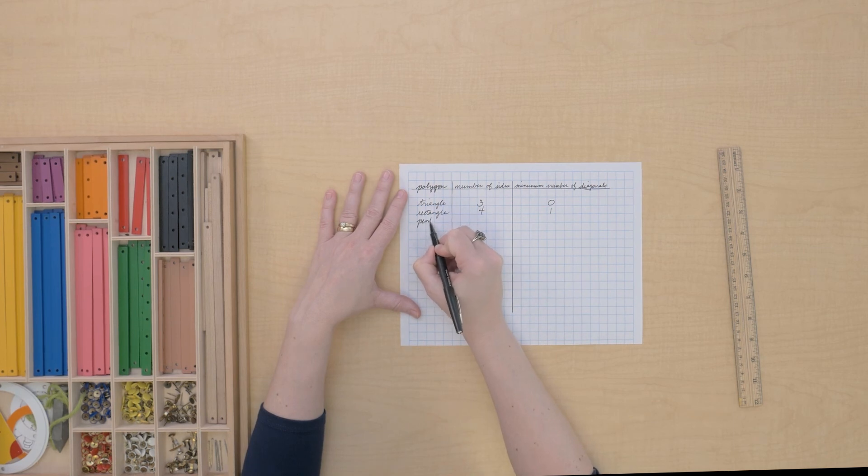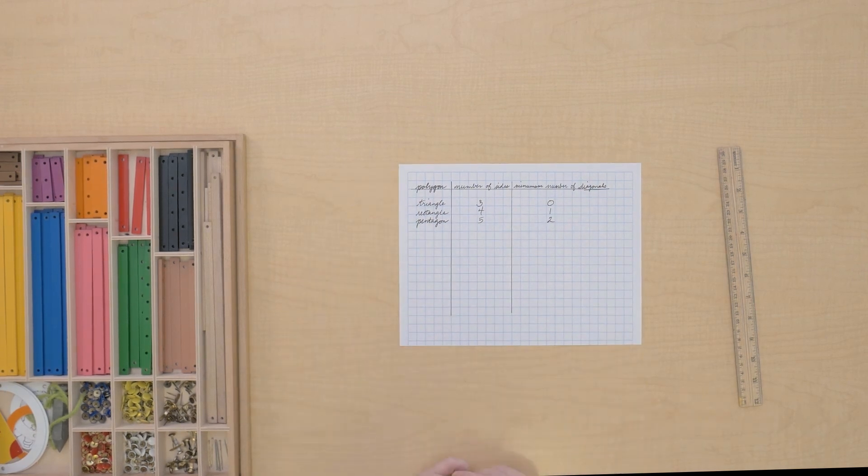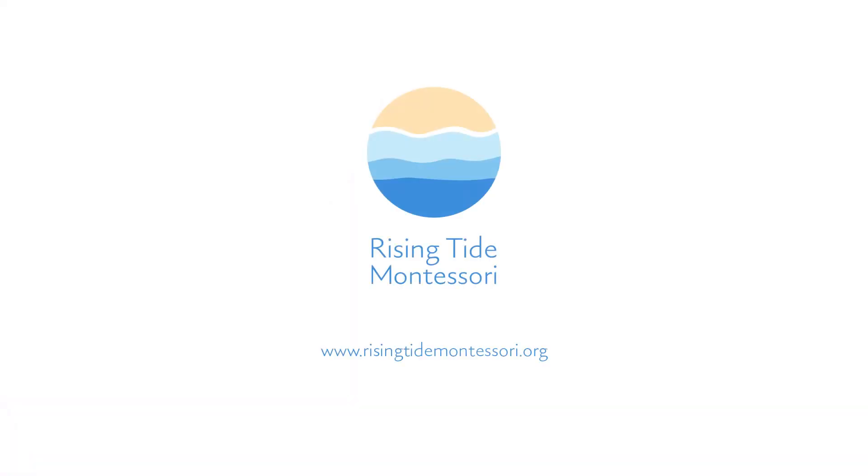And the pentagon? Five sides and two diagonals. Why don't you finish filling this out with everything else you've discovered about polygons and their diagonals?